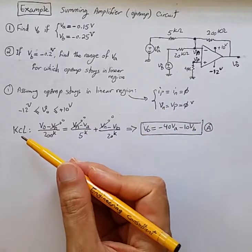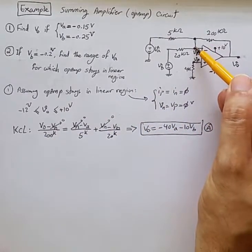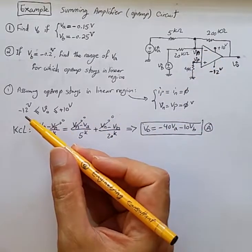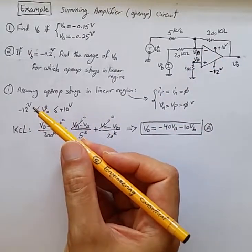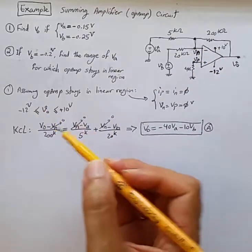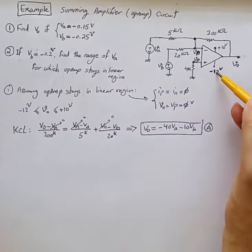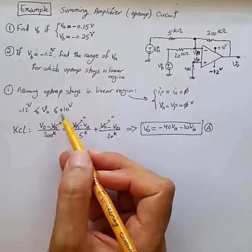Now we can write down KCL for this terminal. And given that we are assuming op-amp is in linear region, then we can say the output should be limited to the supply voltages of the op-amp. That's what is written here.